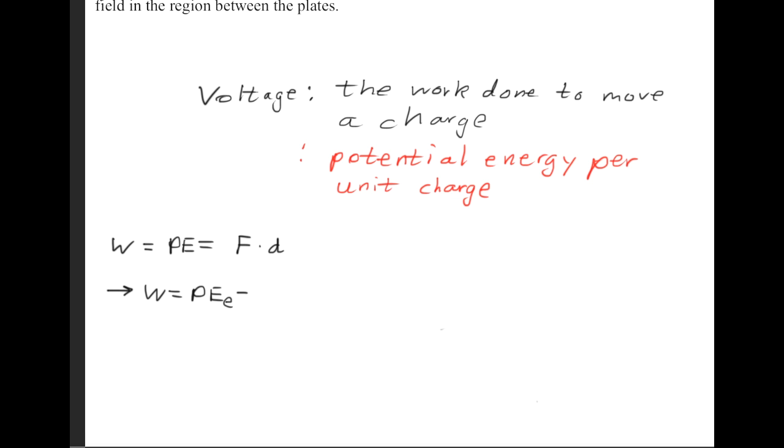So we get that the work, which is also equal to the potential energy, or I should say electrical potential energy, is equal to Coulomb's constant times the charge of the first particle times the charge of the second particle multiplied by this distance here.